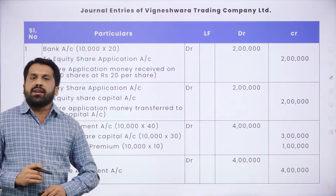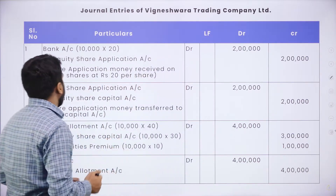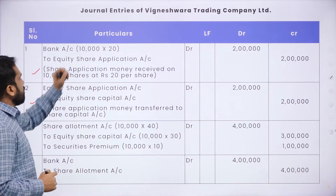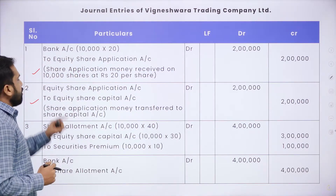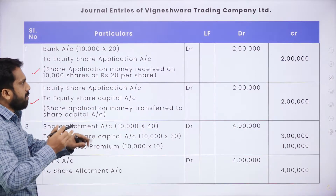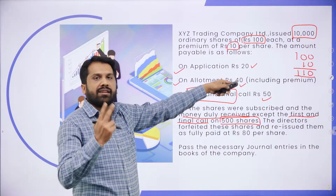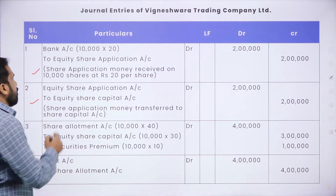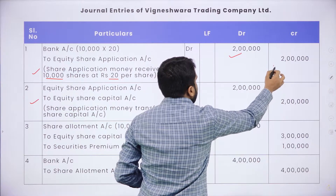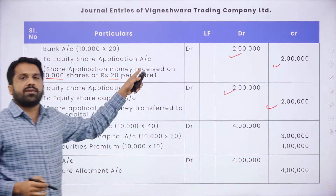For application, we have two journal entries. First: Bank Account Dr. to Equity Share Application Account. Second: Equity Share Application Dr. to Equity Share Capital Account. Number of shares: 10,000 × ₹20 = ₹2,00,000. Both journal entries carry ₹2 lakh each. Your application account is done.